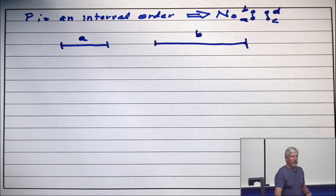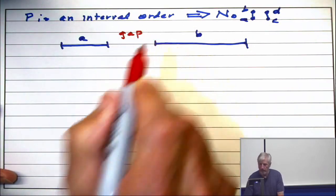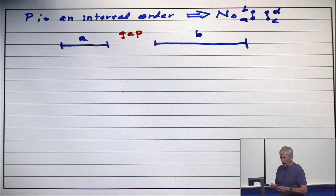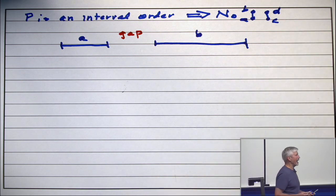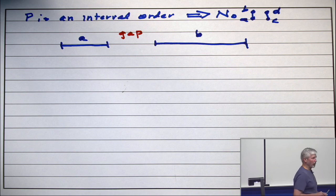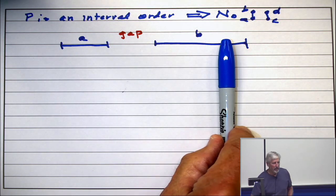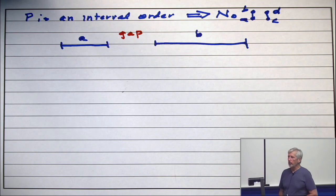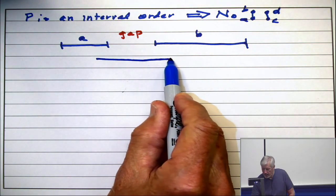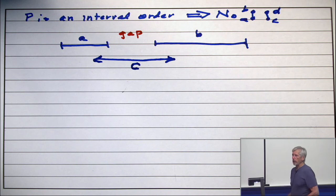Everybody with me on that simple observation? Now, because A is less than B, there is a gap in here. Now, look at the interval for C. The interval for C is incomparable with both A and B. What does the interval for C look like? It can't end over here because that would make C less than B. It can't start over here because that would make A less than C. So the conclusion is that the interval for C must contain the gap.